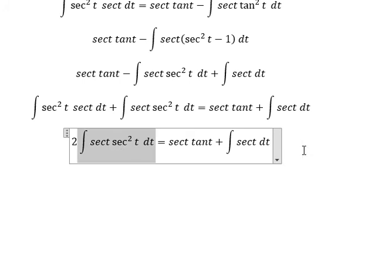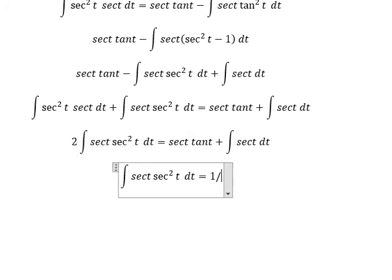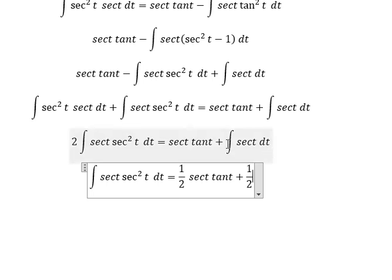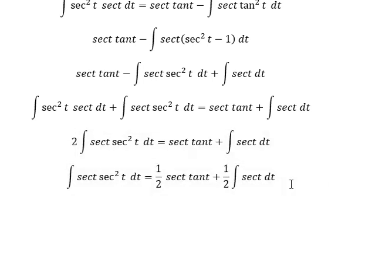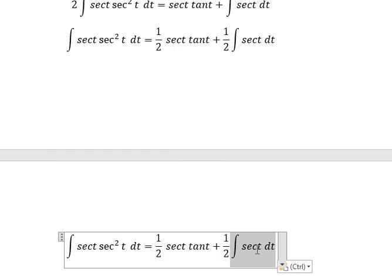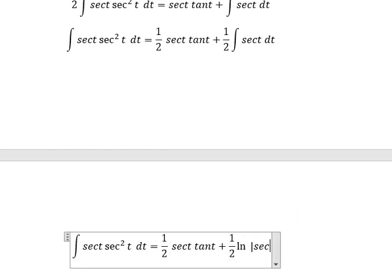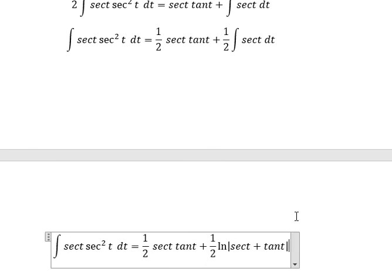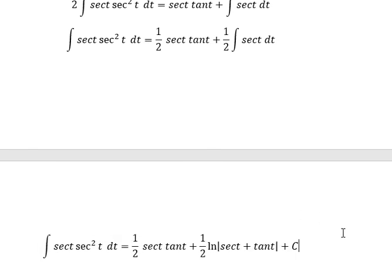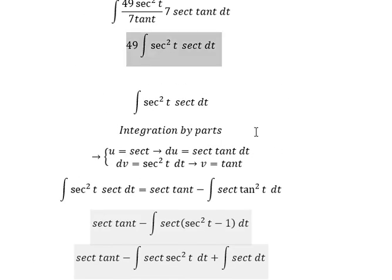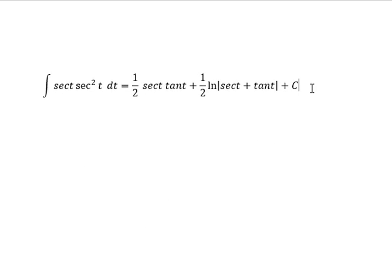We divide both sides by 2. The integral of sec(t) is ln of the absolute value of sec(t) plus tan(t), and we add the constant C. We then multiply both sides by 49.